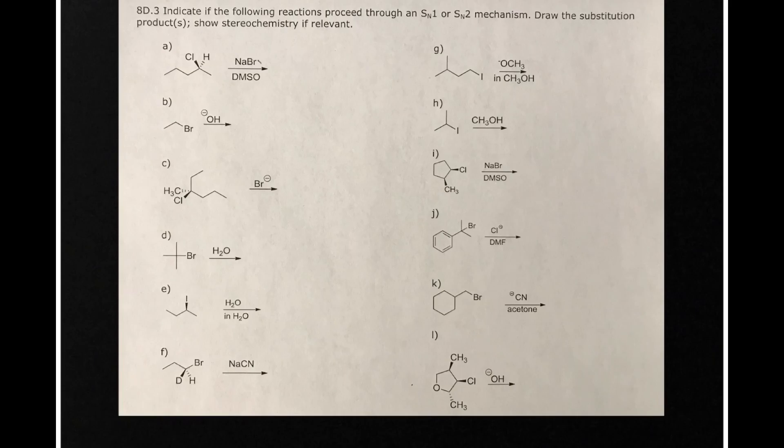In this problem, we want to do what we did in the previous problem. We want to look at the alkyl halide. If it's primary, we're going to draw SN2 products. And remember, we look at stereochemistry and basically invert the stereochemistry if it's SN2.